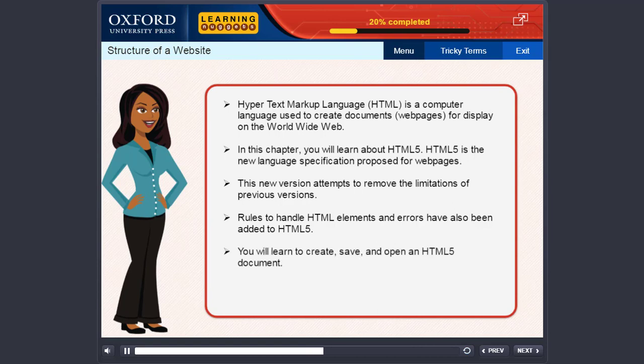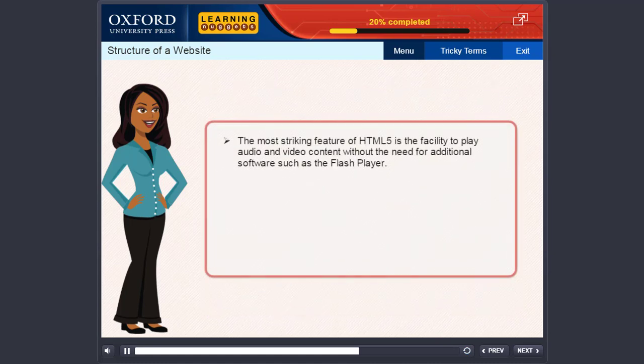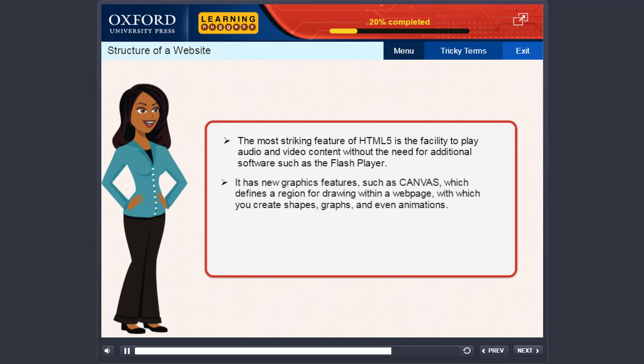Rules to handle HTML elements and errors have also been added to HTML5. You will learn to create, save, and open an HTML5 document. We will also discuss cascading style sheets, CSS, and background properties. The most striking feature of HTML5 is the facility to play audio and video content without the need for additional software, such as the Flash Player. It has new graphics features, such as canvas, which defines a region for drawing within a web page, with which you create shapes, graphs, and even animations.